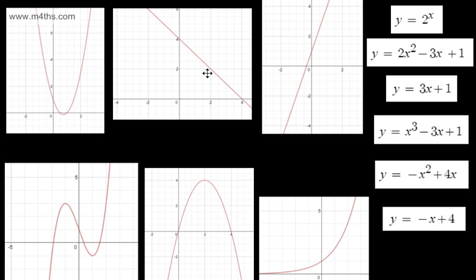Linear graphs can be written in the form y is equal to mx plus c. So if we look down our list, we've got y is equal to 3x plus 1 and y is equal to minus x plus 4. This graph is going to have a positive gradient and that gradient will be 3. This one is going to have a negative gradient and the gradient will be minus 1.